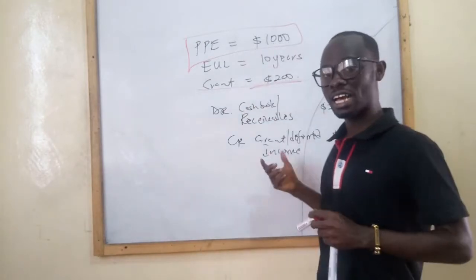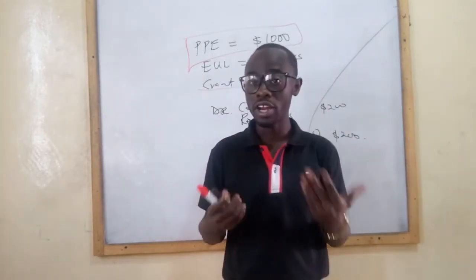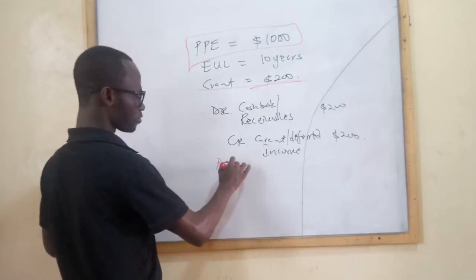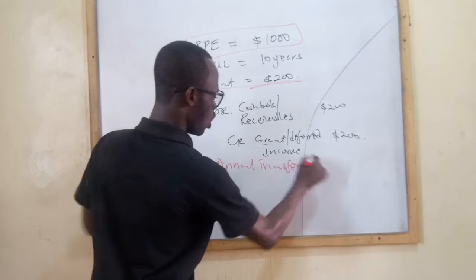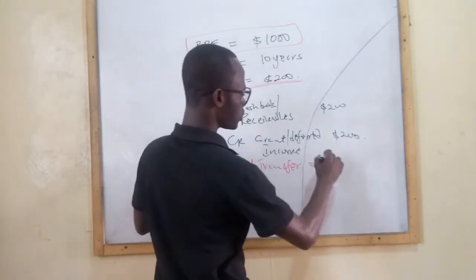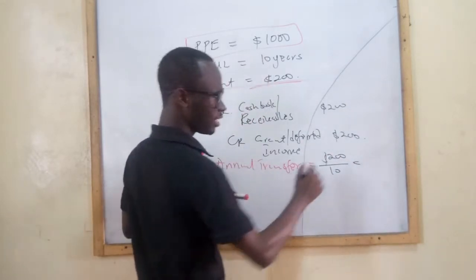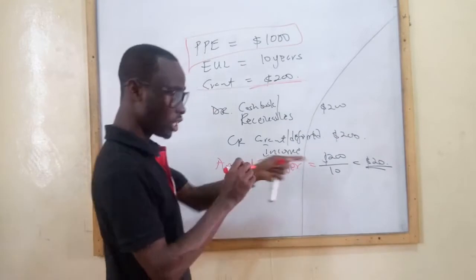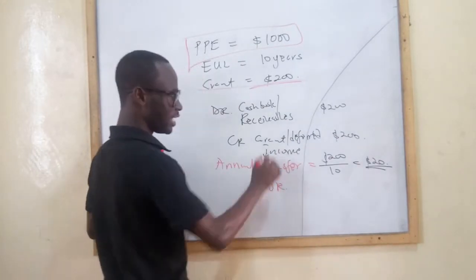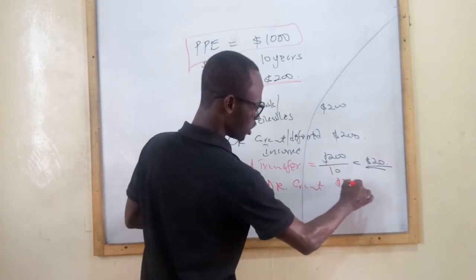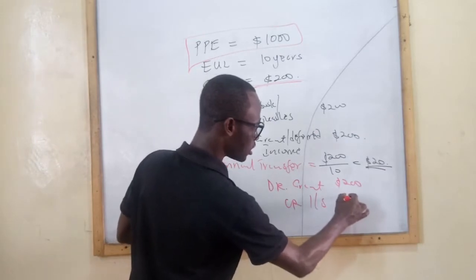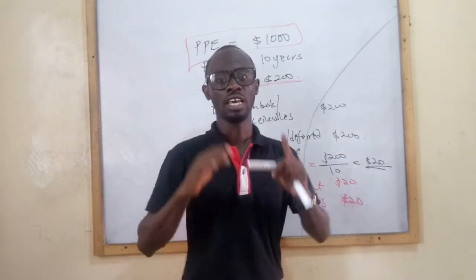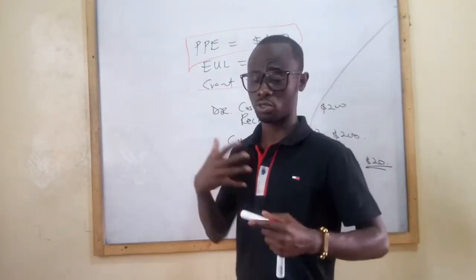Since we are treating it as deferred income, we amortize it over the economic useful life of the asset. Every year we make an annual transfer to the income statement: $200 divided by 10 years equals $20 per year. The double entry is to debit the deferred income account with $20 and credit the income statement with $20. This is how we account for the grant when treating it as deferred income.